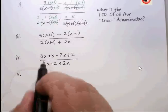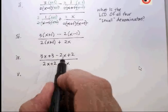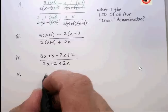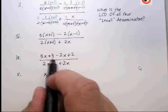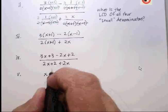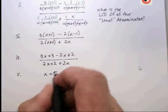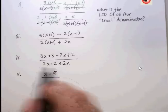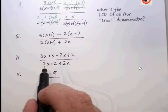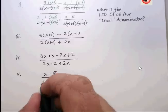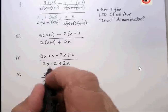Now why did I do that? What I want to do is add up all my like terms and see if there's anything that's factorable after I added up everything. So let's try and see what happens: 3x minus 2x is just 1x plus 3 plus 2 is plus 5 in my numerator. Denominator I have 2x plus 2x which is just 4x and then plus 2.